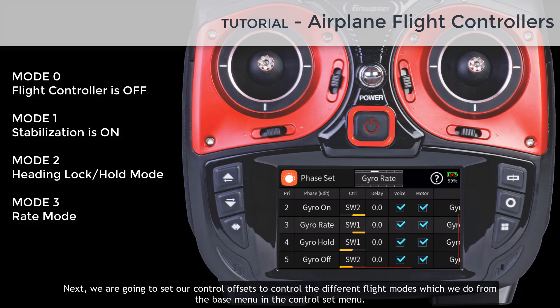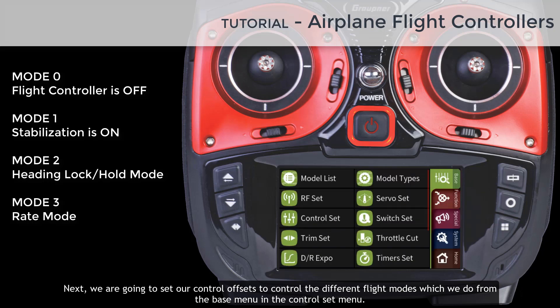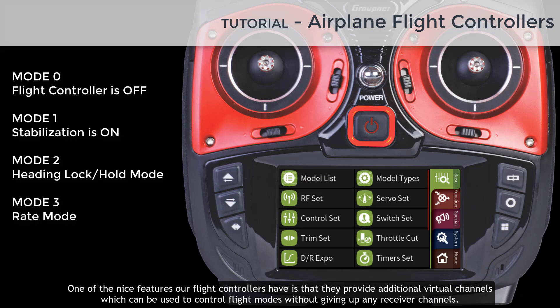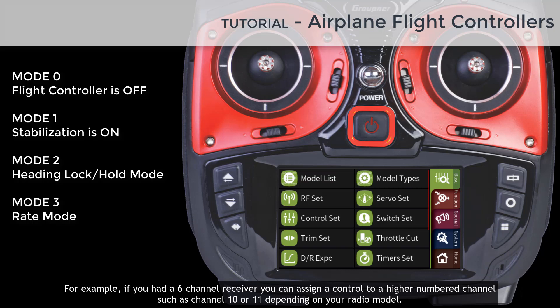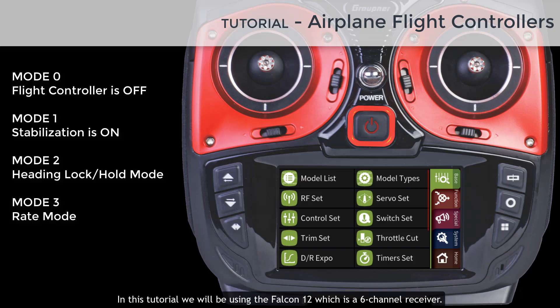Next we are going to set our control offsets to control the different flight modes, which we do from the base menu in the control set menu. One of the nice features our flight controllers have is that they provide additional virtual channels which can be used to control flight modes without giving up any receiver channels. For example, if you had a six channel receiver you can assign a control to a higher number channel such as channel 10 or 11. In this tutorial we will be using the Falcon 12, which is a six channel receiver. Channel 8 will be used for changing the flight modes and channel 9 for gain control.